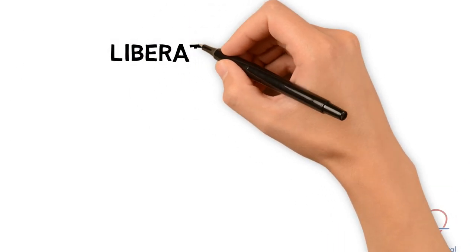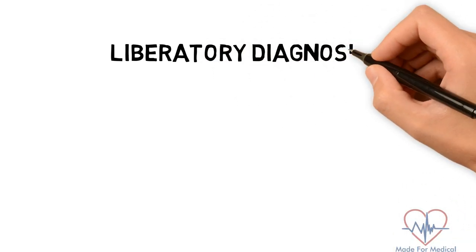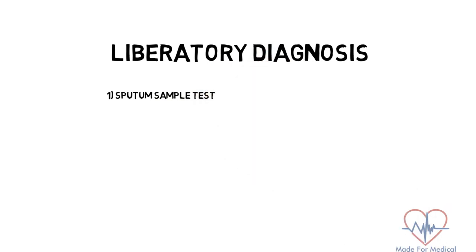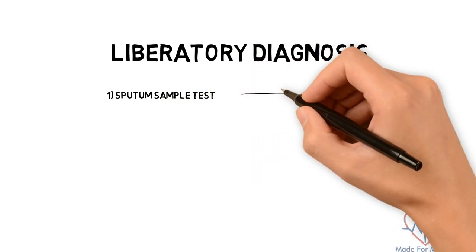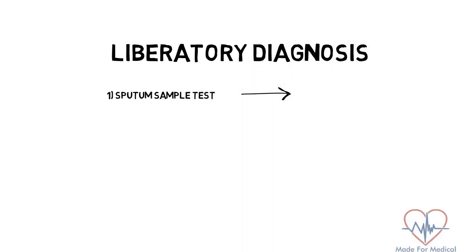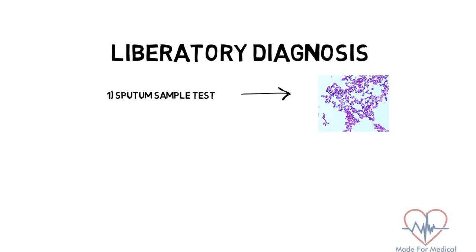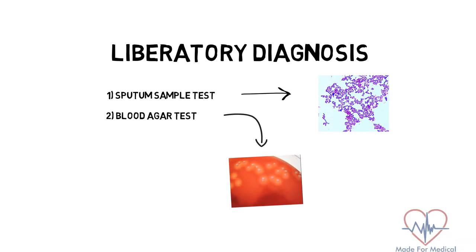We can do two types of tests to diagnose staphylococcus in a given sample. The first one is a sputum sample test — when we do gram staining, we'll see gram-positive or blue cocci arranged in clusters if staphylococcus is present. The second one is a blood agar test, and we'll see golden colonies in the blood agar, as shown in the picture.